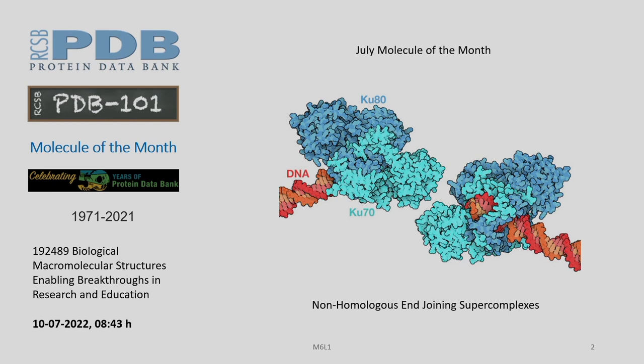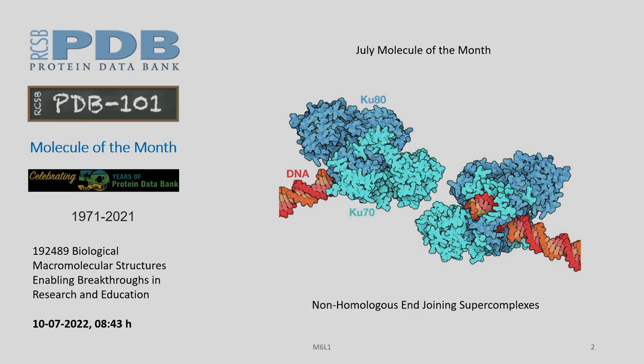This month the non-homologous end joining super complex has been listed by PDB as such. You know about the DNA double strand break mechanisms and how DNA double strand breaks are repaired by cellular mechanisms. Among them, NHEJ is one of the major players, and this complex is also important from the point of view of TALEN technology, because once we use TALEN to induce defined double strand breaks on DNA sequences, it has to undergo repair either by the homology repair pathway or the NHEJ pathway.